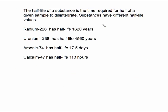The half-life of a substance is the time required for half of a given sample to disintegrate. Different substances have different half-life values. So radium-226 has a half-life of 1,620 years. Uranium-238 has a half-life of 4,500 years. Arsenic-74 has a half-life of just 17 days. Calcium-47 has a half-life of 113 hours. This is just a couple examples of elements and their half-lives.